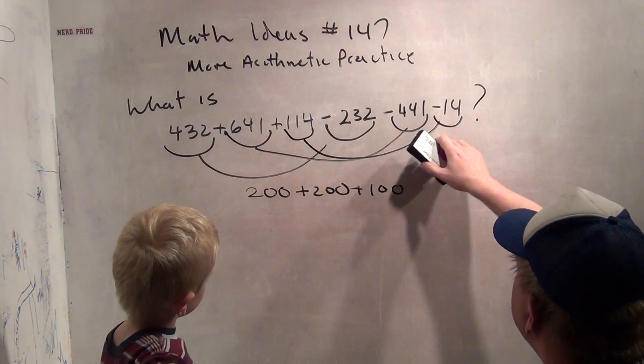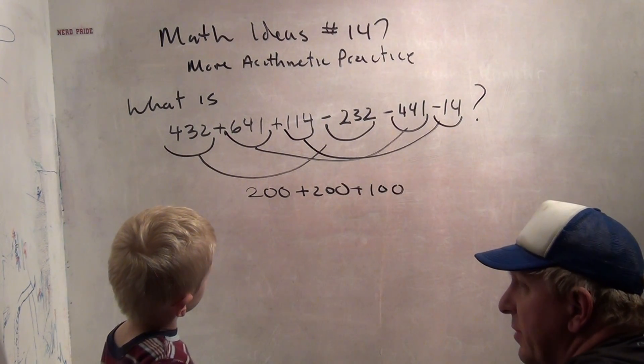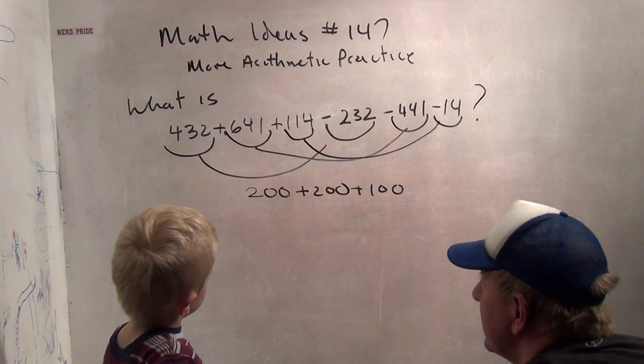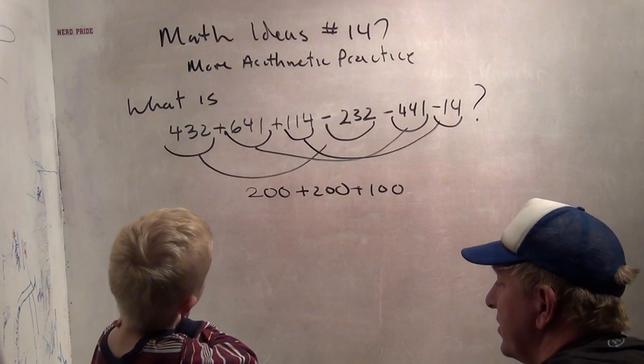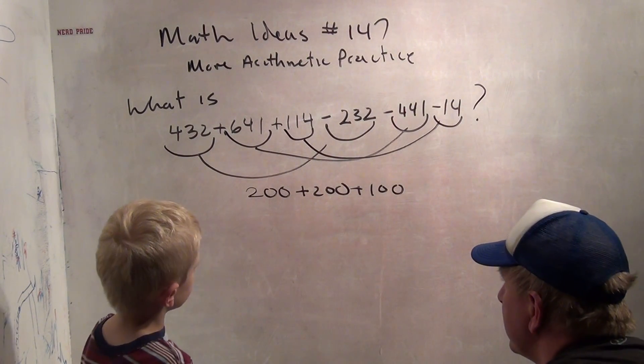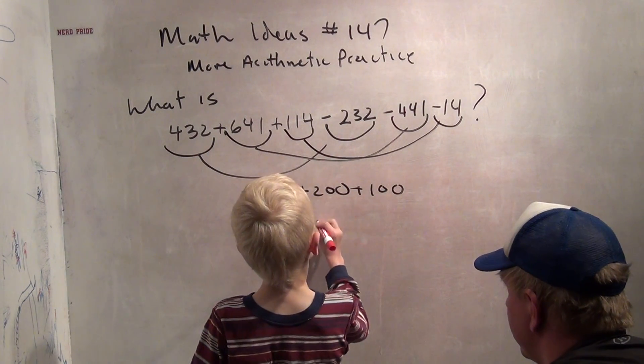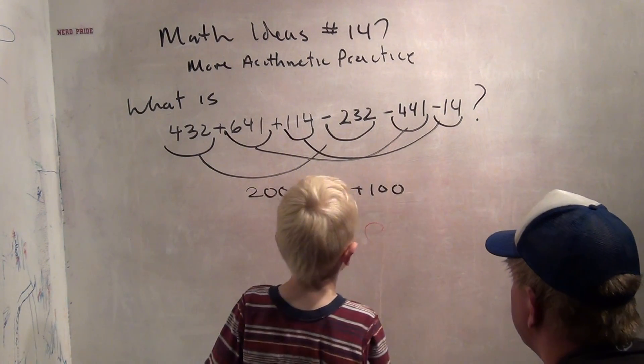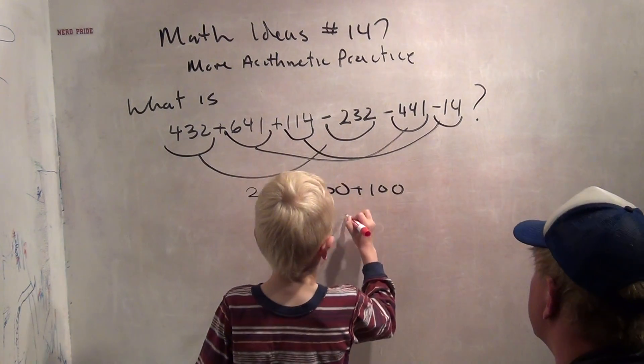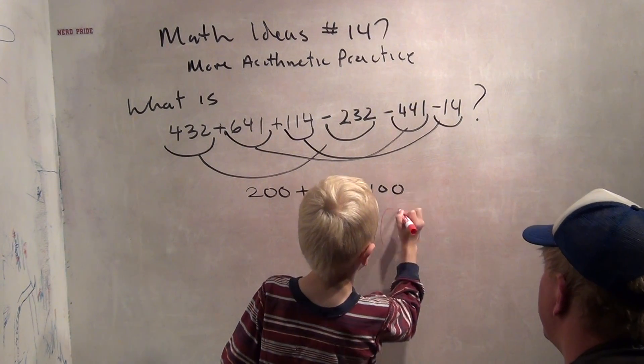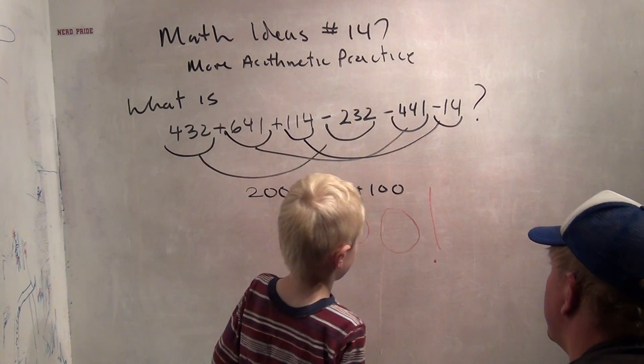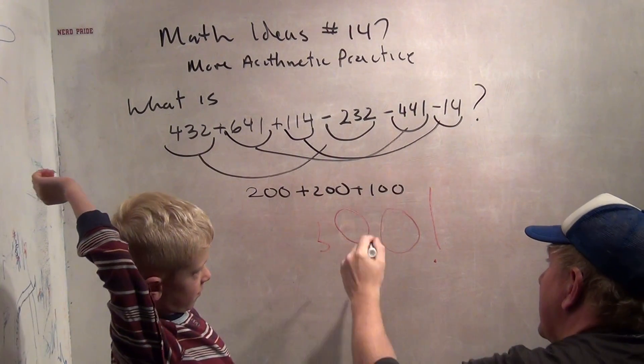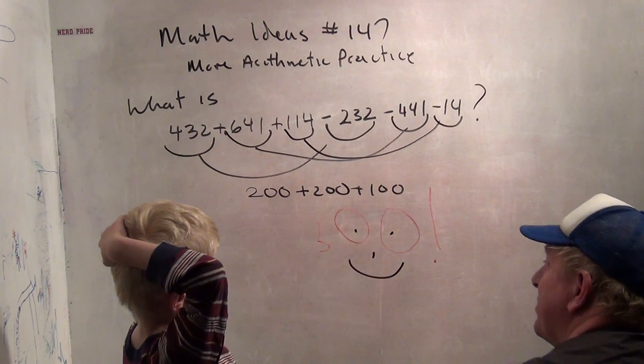So, this whole complicated, super complicated, so crazy complicated problem simplifies to be 200 plus 200 plus 100, which is... Why don't you write it? It's 500. 500, and then write a big exclamation point. Wait, you've got to make your zeros a little better than that. 500, exclamation point. High five. Happy face 500.